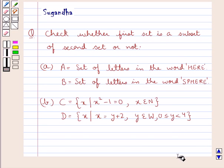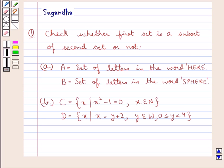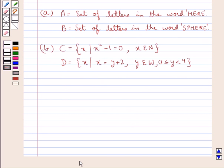Hello and welcome to the session. In this session we discuss the following question: check whether the first set is a subset of the second set or not. In the first part, set A is equal to the set of letters in the word HAIR, and set B is equal to the set of letters in the word SQUARE. In part B, set C is equal to {x such that x squared minus 1 equals 0, where x belongs to N}, and set D is equal to {x such that x equals y plus 2, where y belongs to W and y is greater than or equal to 0 and less than 4}.